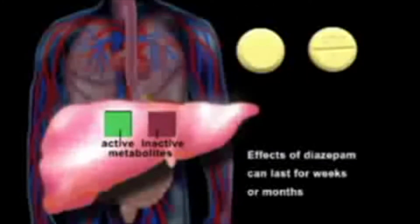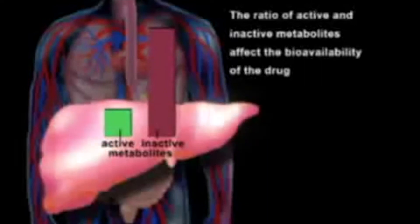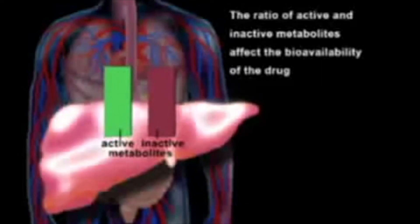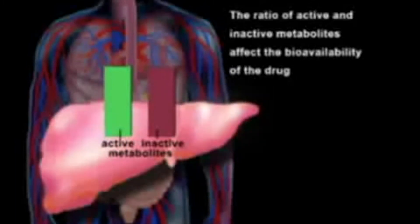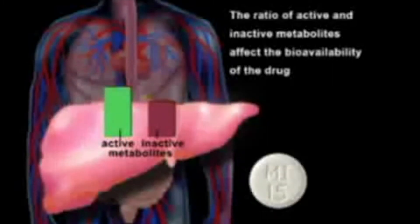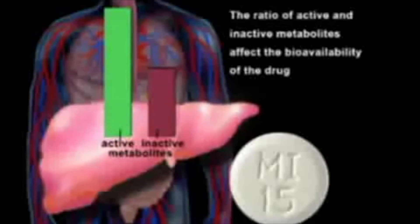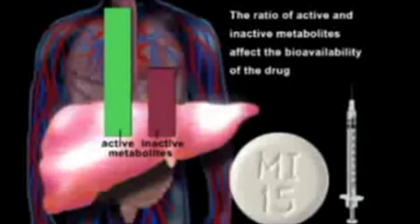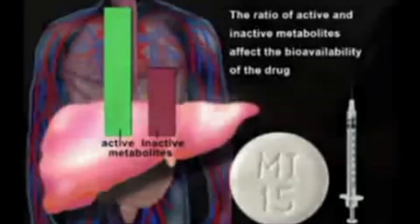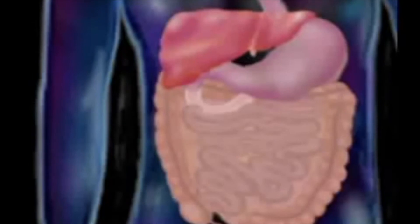The active metabolites of some drugs cause prolonged duration of activity. For instance, the effects of diazepam can last for weeks or months. The ratio of active and inactive metabolites affects the bioavailability of the drug. This is the primary reason that enteral medications of the same dose have less effect than if given parenterally. For example, morphine given as tablets requires a significantly higher dose for effective analgesia than morphine given intravenously or by intramuscular injections. The first pass effect may be low, moderate or high depending on the drug.